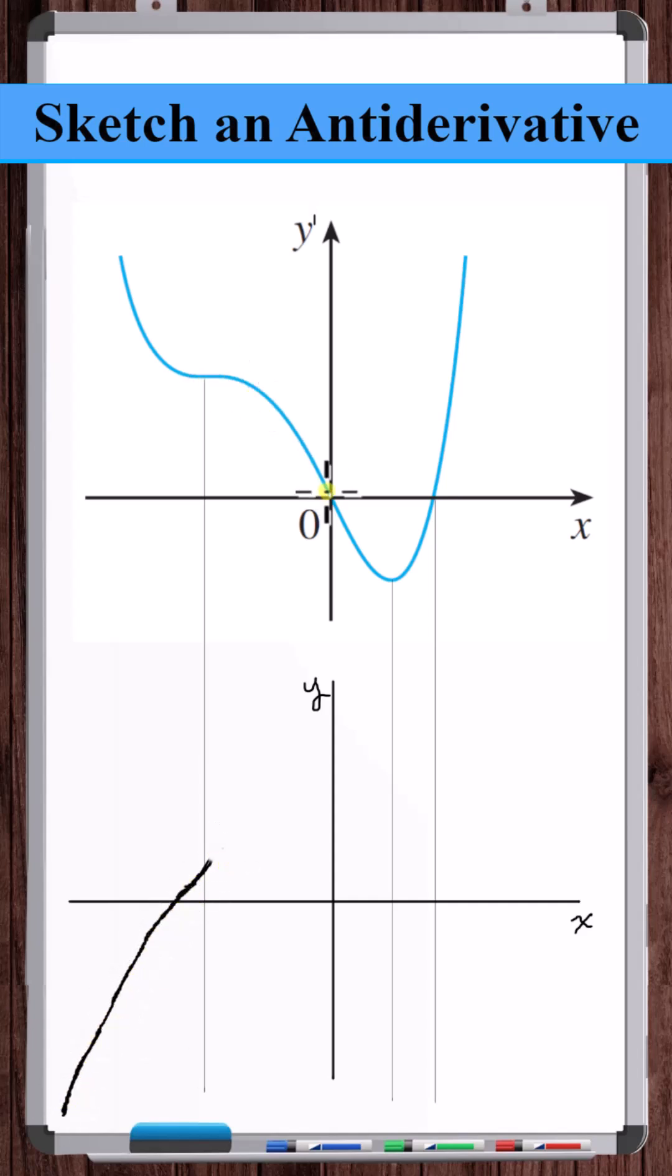And then from here, the slope gets smaller and smaller until it's zero at x is equal to zero. So we'll have a peak point here.